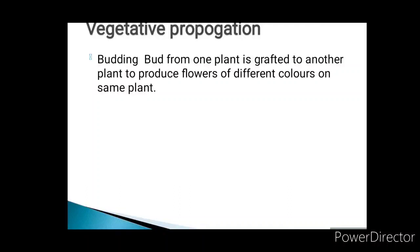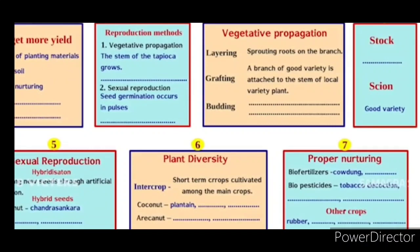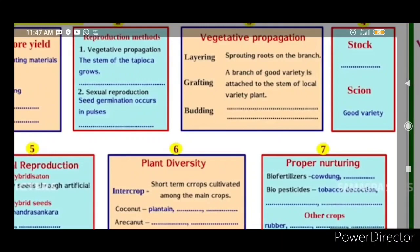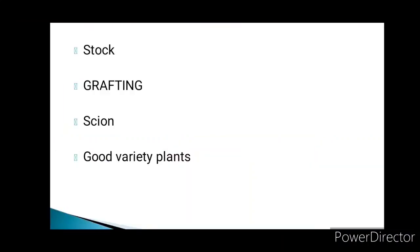The seed of a plant is grafted. The next one is stock and scion — good variety. The stock and scion method is used in grafting.